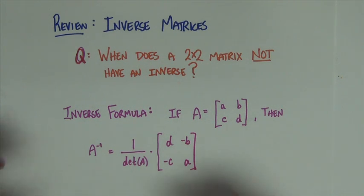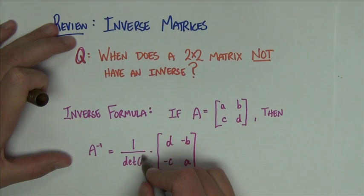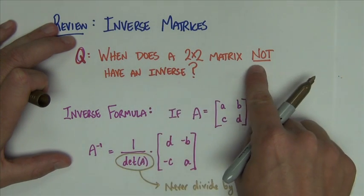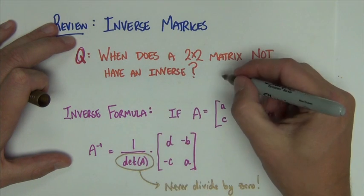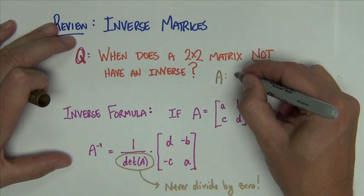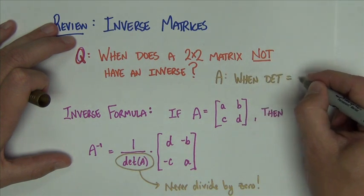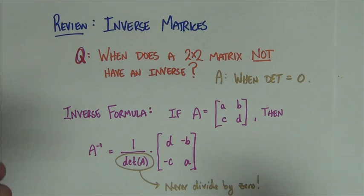Now specifically, the part that is interesting to us to answer this question is this. We know in a fraction we can never divide by 0. So when does a 2 by 2 matrix not have an inverse? The answer to that question is when the determinant equals 0. We have to choose any 2 by 2 matrix whose determinant is not 0. As long as we do that, we're going to be perfectly fine.